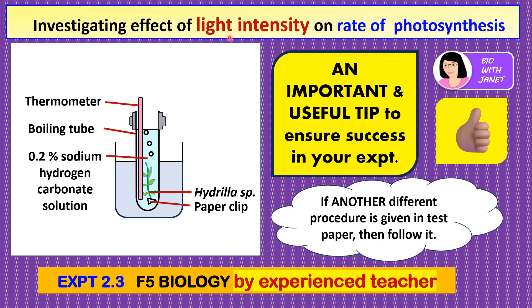Other than investigating the effect of light intensity, there's also investigating the effect of carbon dioxide concentration, temperature, or even the effect of color of light — like blue, green, and red light — on the rate of photosynthesis. All these photosynthesis experiments require the student to count the number of air bubbles released in a given time as the responding variable. So we have to know how to coax the plant to produce the oxygen bubbles, which can sometimes be a difficulty.